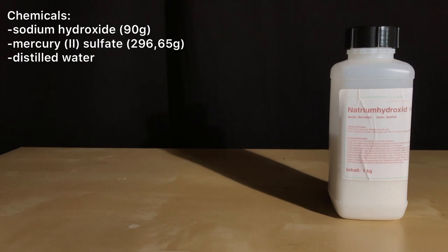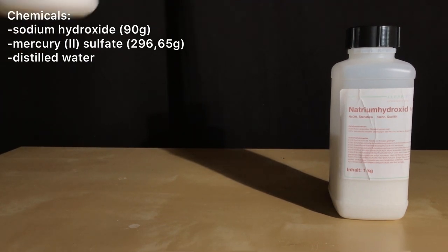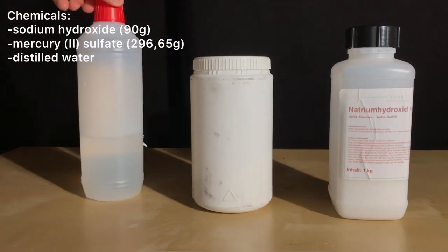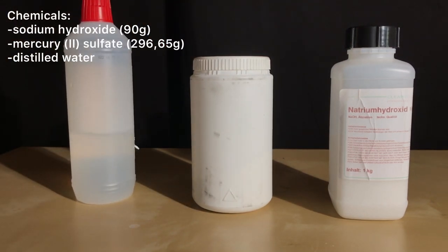Besides distilled water, only two chemicals are needed: 90 grams of sodium hydroxide, which represents a 10 gram excess, and 296.65 grams of mercury 2 sulfate.